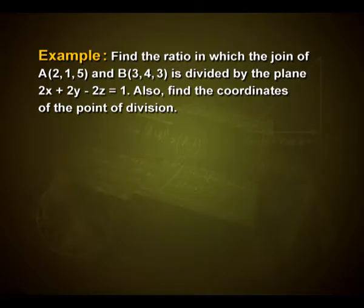Find the ratio in which the join of point A(2, 1, 5) and B(3, 4, 3) is divided by the plane 2x + 2y − 2z = 1. Also find the coordinates of the point of division.